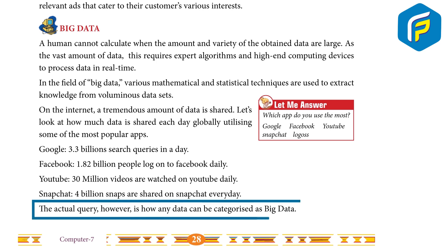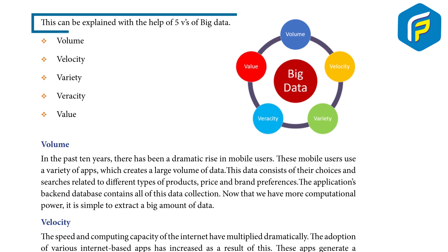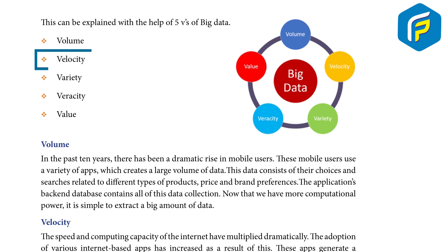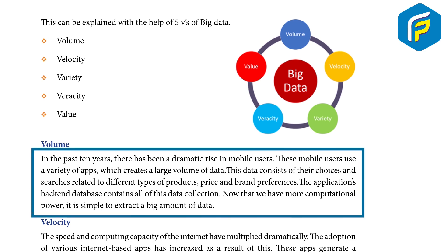The actual question is: how can any data be categorized as big data? This can be explained with the help of the five V's of big data: volume, velocity, variety, veracity, and value. Volume: in the past 10 years there has been a dramatic rise in mobile users. These mobile users use a variety of apps, which creates a large volume of data.